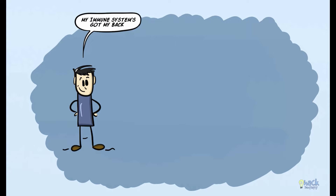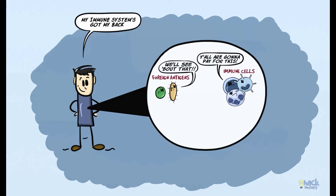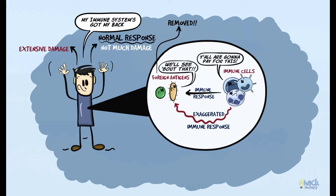The immune system protects the human body against disease by dispatching immune cells whenever the body encounters foreign material or antigens. These immune cells elicit an inflammatory response to remove or eliminate the foreign antigen without causing much damage to the host. However, under certain conditions, the host may elicit an exaggerated or inappropriate immune response to a foreign antigen, causing much damage to host tissues. This exaggerated or inappropriate immune response is termed hypersensitivity.